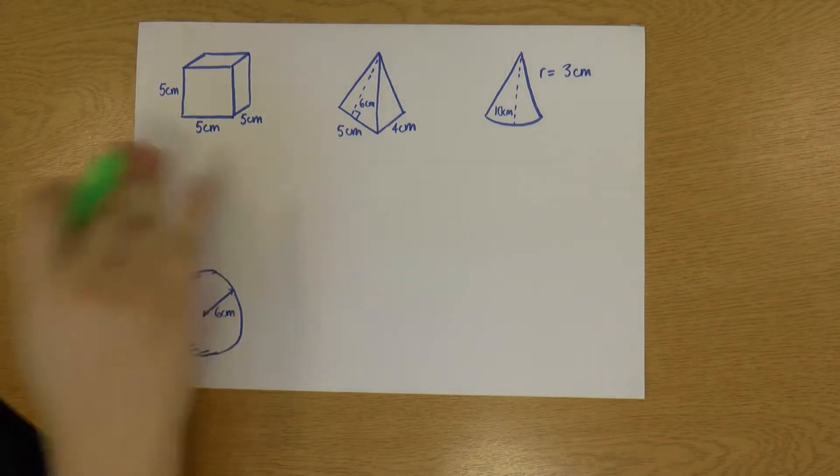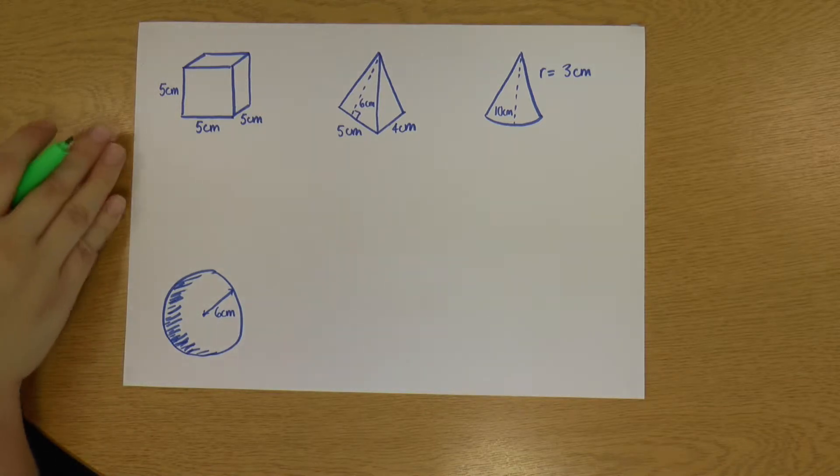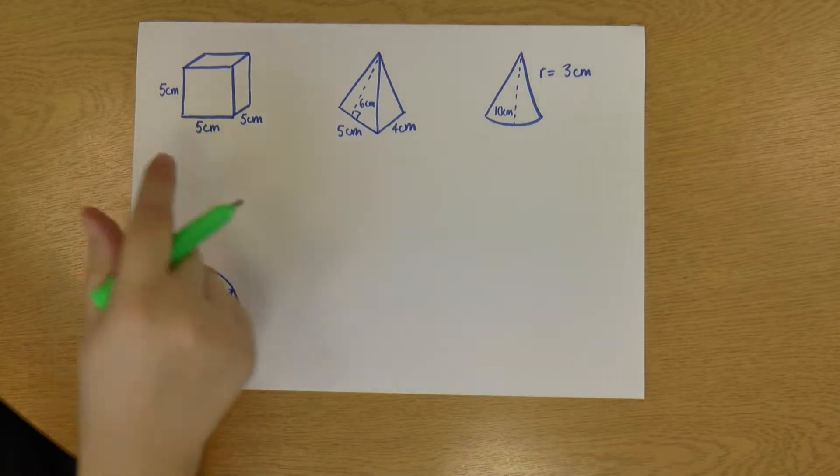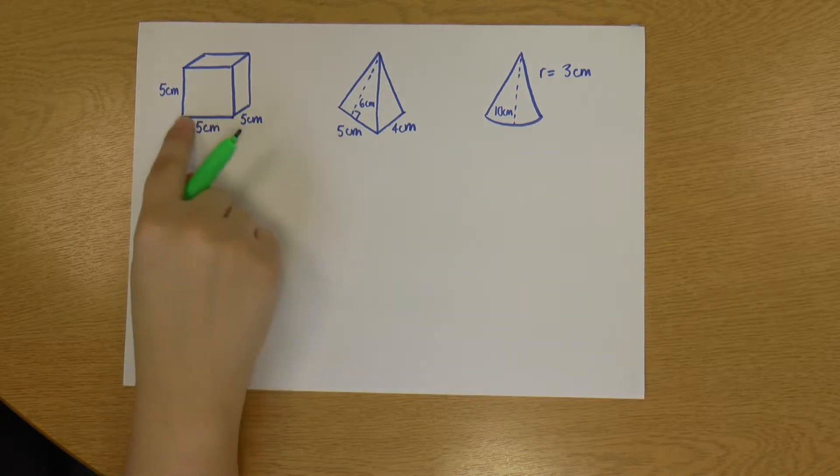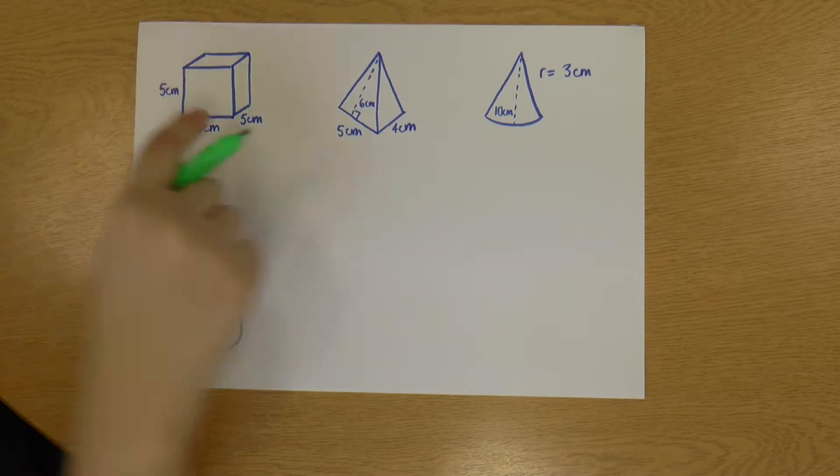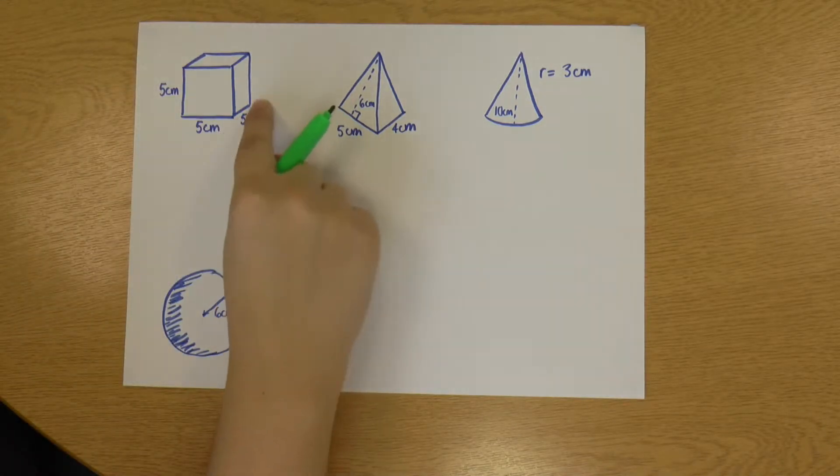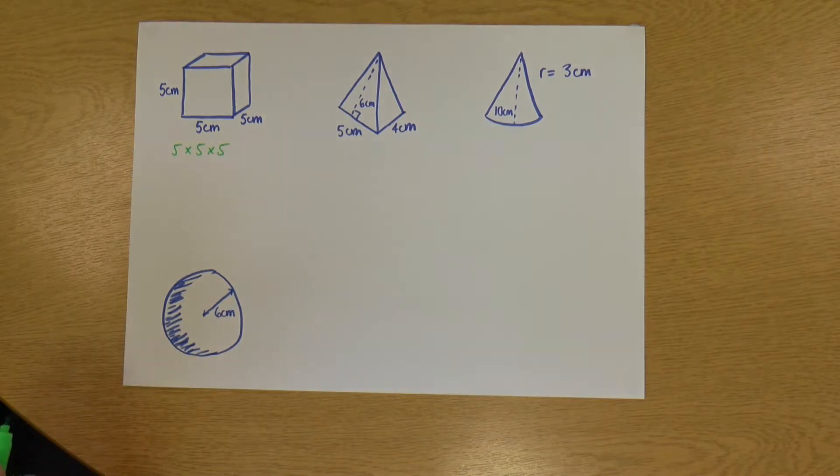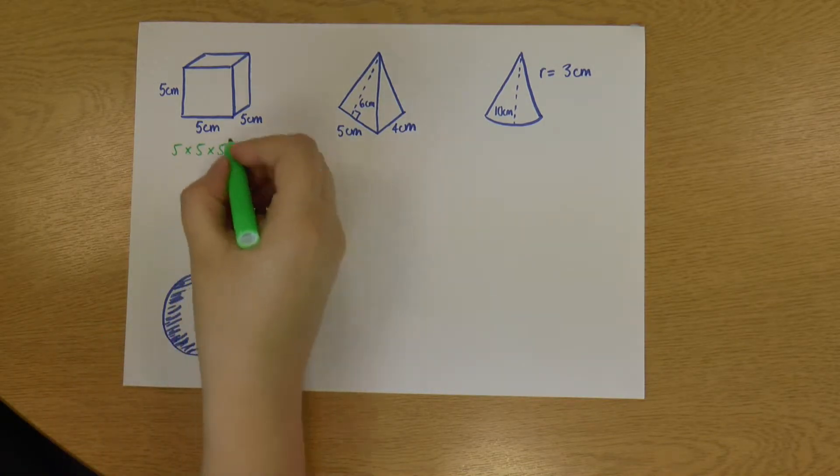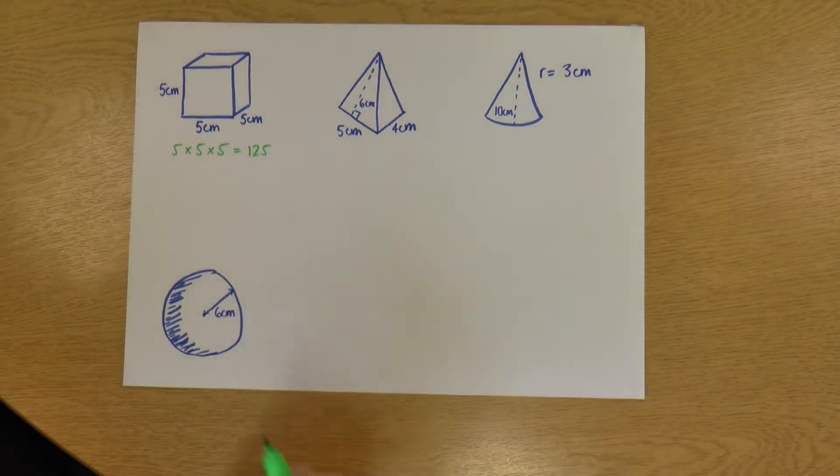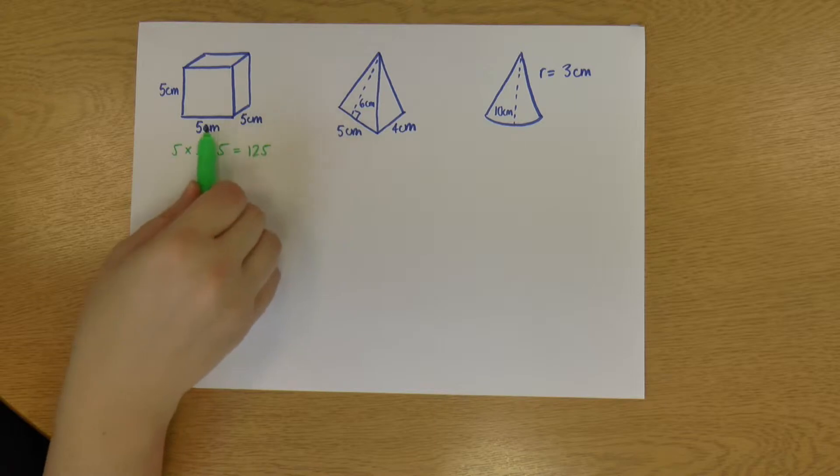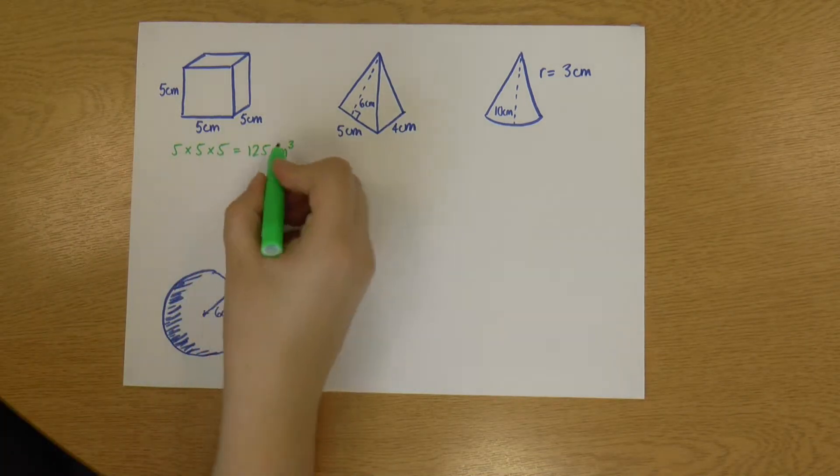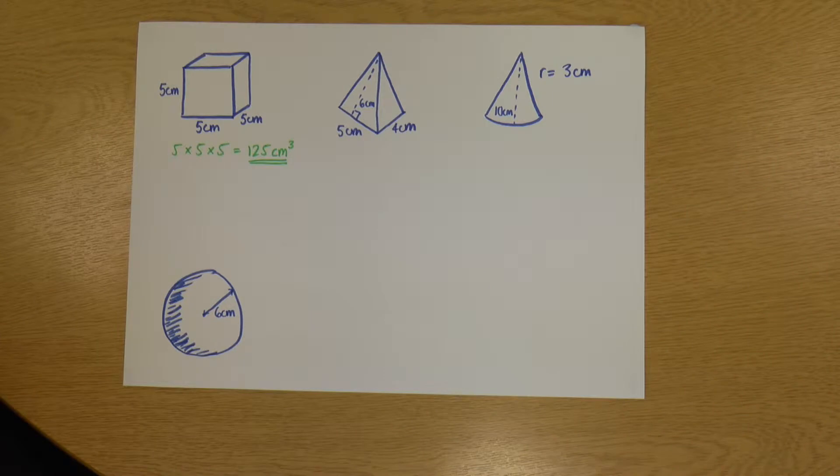So let's start with the cuboid. With cuboids and cubes the rule works exactly the same. We can just multiply the length of a face by the height of the face by the depth of the shape. So we can just do 5 times 5 times 5. That's 125 and this time I've got my units times units times units. That means it's units cubed. So my volume of this cube is 125 centimeters cubed.